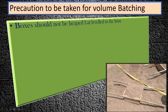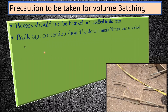Now the precautions to be taken for volume batching: First, the boxes should not be heaped but leveled to the brim. You should remove any excess quantity so the material is only filled to the top edge. If some batches are overfilled and others are not, the quantity of material taken will vary, causing errors in the mix ratio.